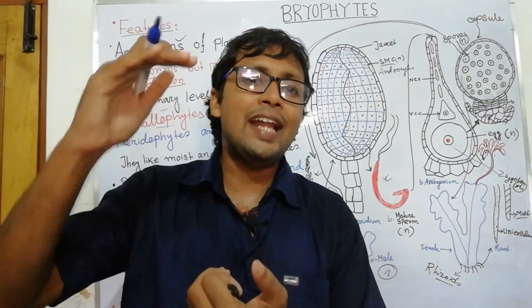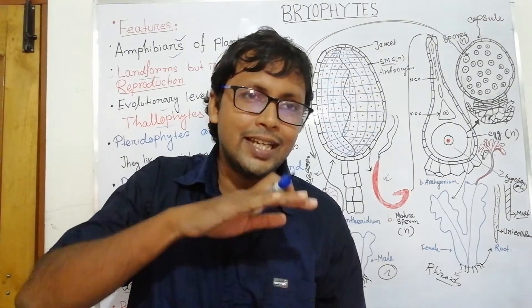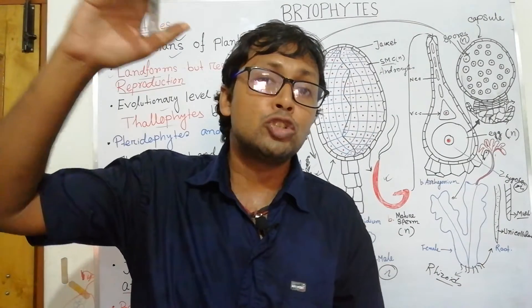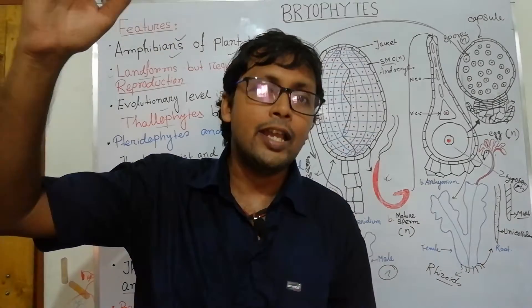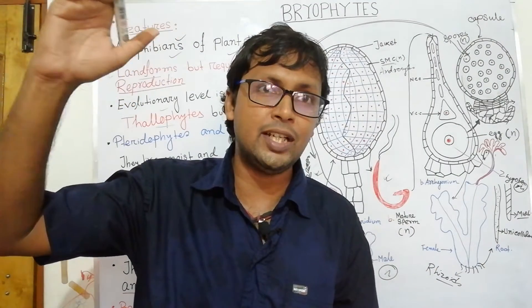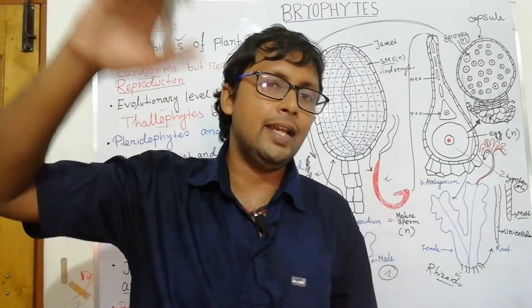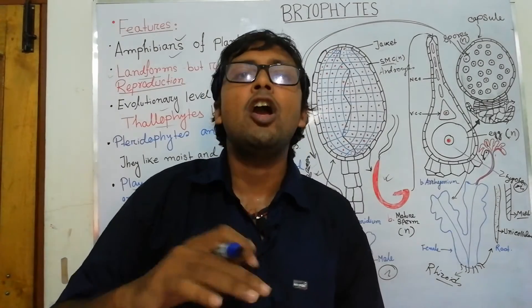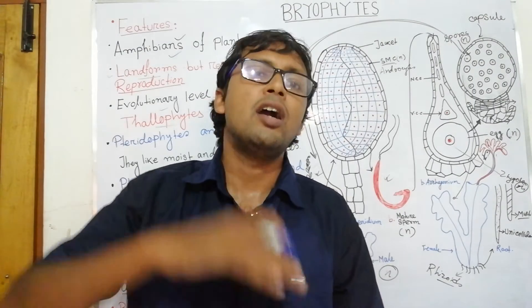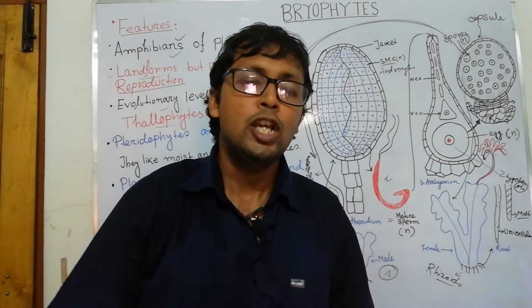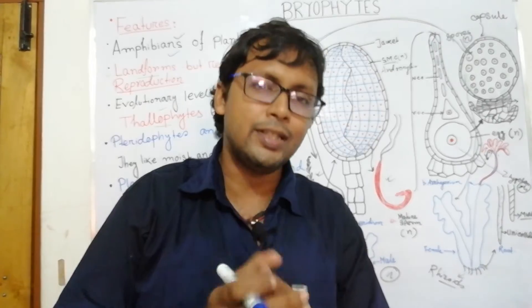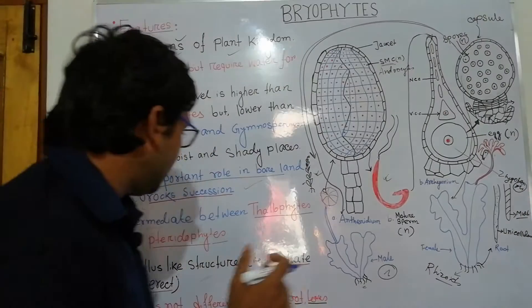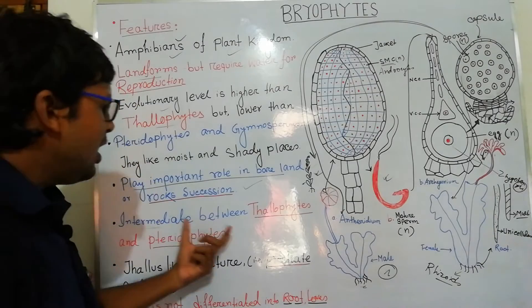Bryophytes are sandwiched — below them are Thallophytes and above them are Pteridophytes. So they are an in-between division. They have some primitive traits compared to Pteridophytes and some improved traits compared to Thallophytes. So it is a sandwiched division — very important.